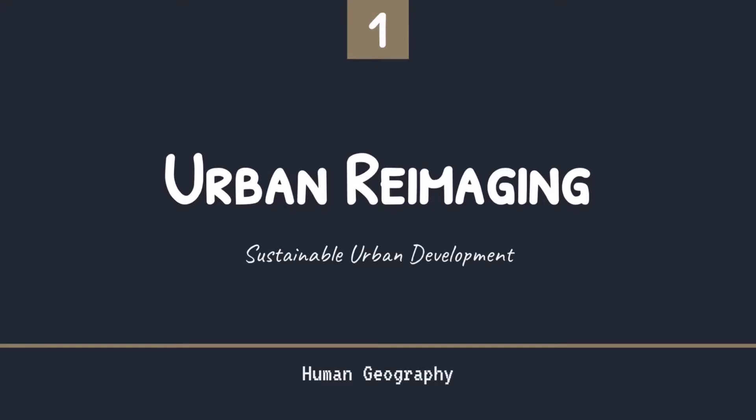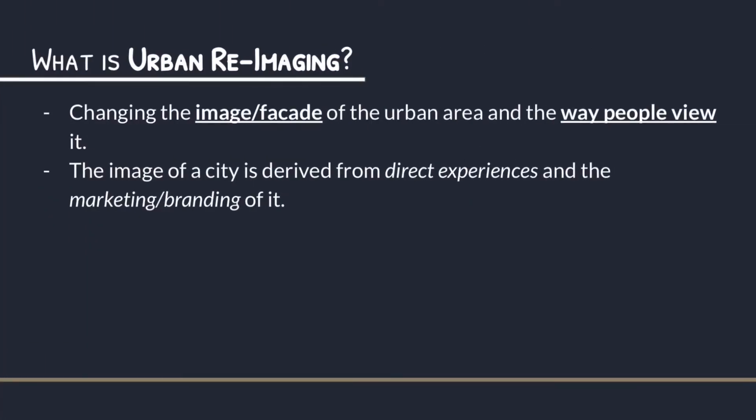So what is urban re-imaging? Urban re-imaging is very simply changing the facade — the image — of a certain urban area, and the way people view it. Essentially you are changing the perception of a city. In Theme 3.2 you're always looking at cities, so make sure you know what scale you're looking at. If re-imaging, you're looking at how people view a certain city — do they like it, does it look lively? Cities derive these perceptions through direct experiences when people arrive, and this can be affected by marketing or branding.